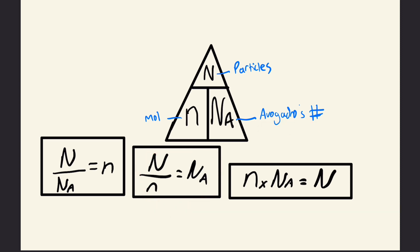Lastly, if we multiply the two terms on the bottom, moles and Avogadro's number, we end up with the number of particles.